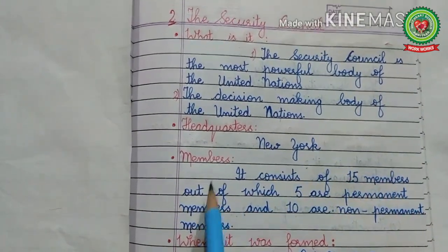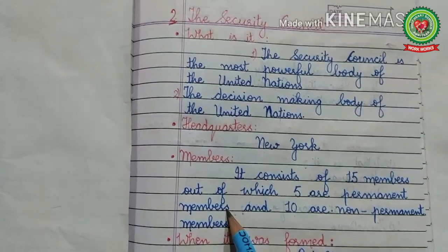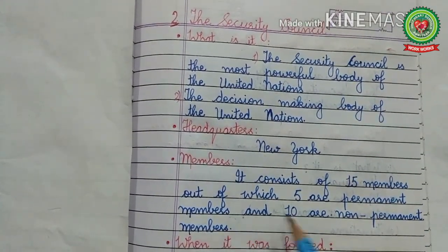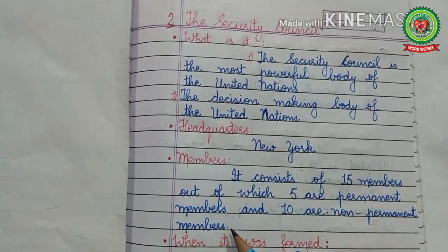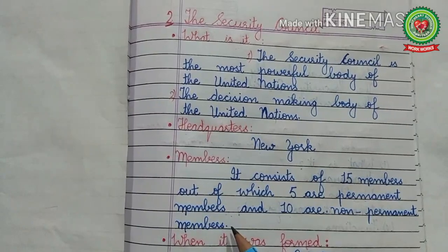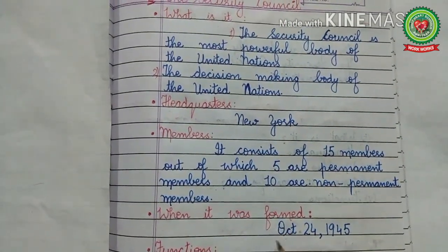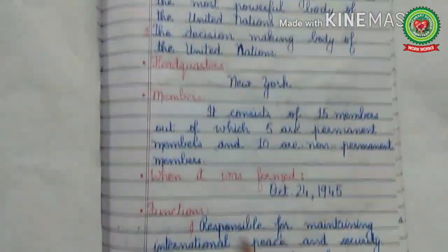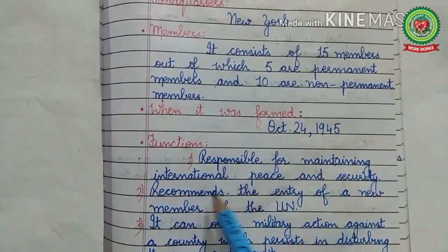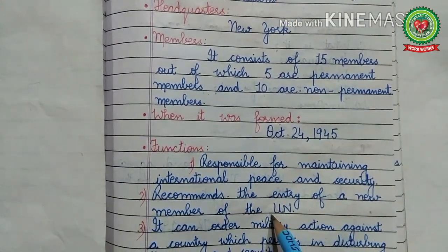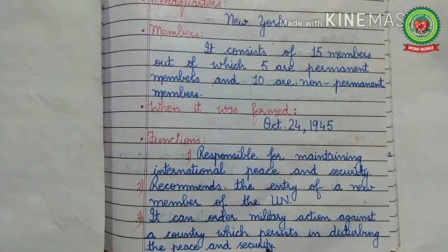Headquarters: located in New York City, United States of America. Members: the Security Council consists of 15 members, out of which five are permanent members — France, Russia, America, China, and England — and 10 are non-permanent members, elected by the General Assembly for two years on a regional basis. No country can be elected as a member immediately on the expiry of its term. When it was formed: October 24, 1945. Main functions: it is responsible for maintaining international peace and security; it recommends the entry of new members; and it can order military action against a country which persists in disturbing peace and security.